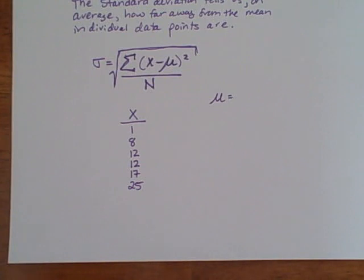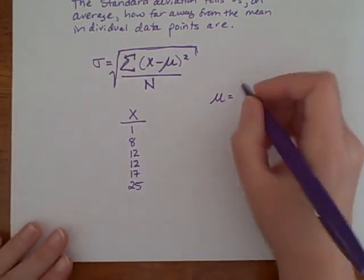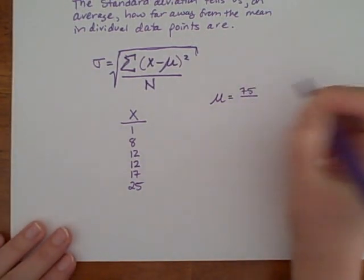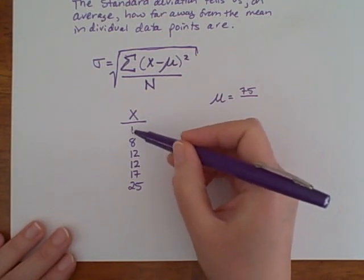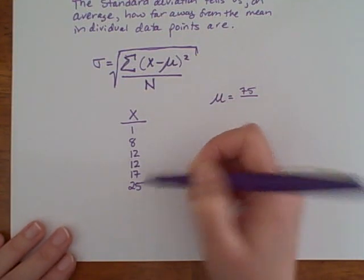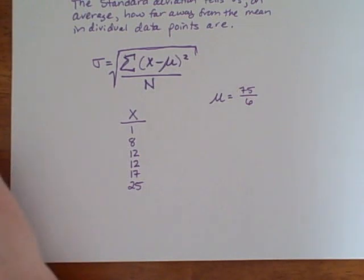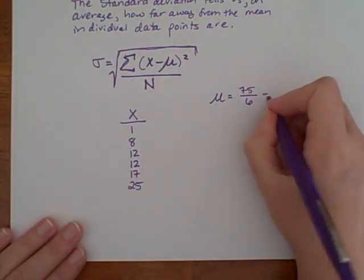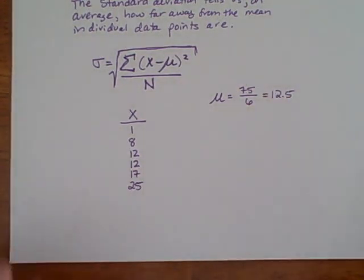So I would add all of those pieces of data up: 1, 8, 12, 12, 17, and 25, and we get a value of 75, and then I want to divide by, there are 1, 2, 3, 4, 5, 6 pieces of data. So we're looking at a value of 12.5 for the mean.